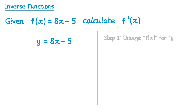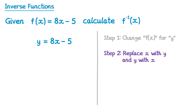Then onto step 2: replace all x's with y's and all y's with x's. This applies to every x and y in your function. In this case we have one of each, so we replace y with x to get x equals, and replace x with y to get 8y − 5. That's step 2 complete.